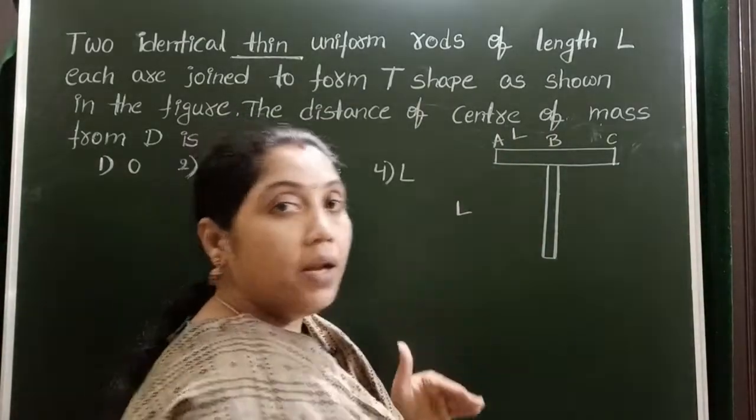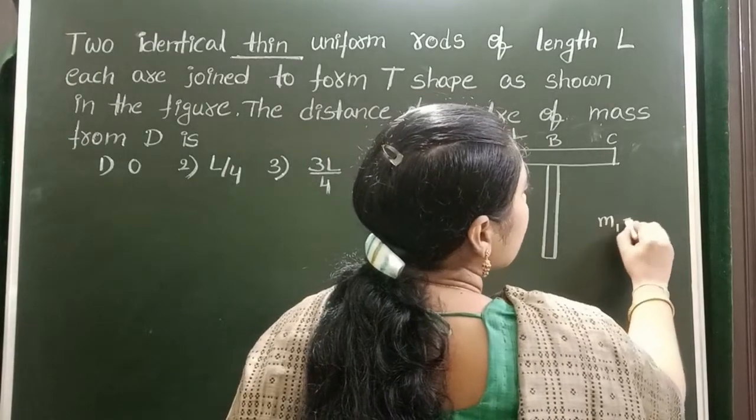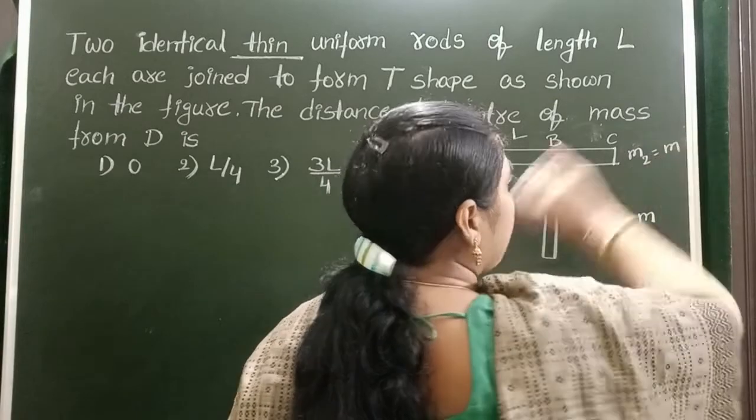Identical means the mass of these two rods is the same. Let us take the mass of the first rod equals M and the mass of the second rod also equals M.